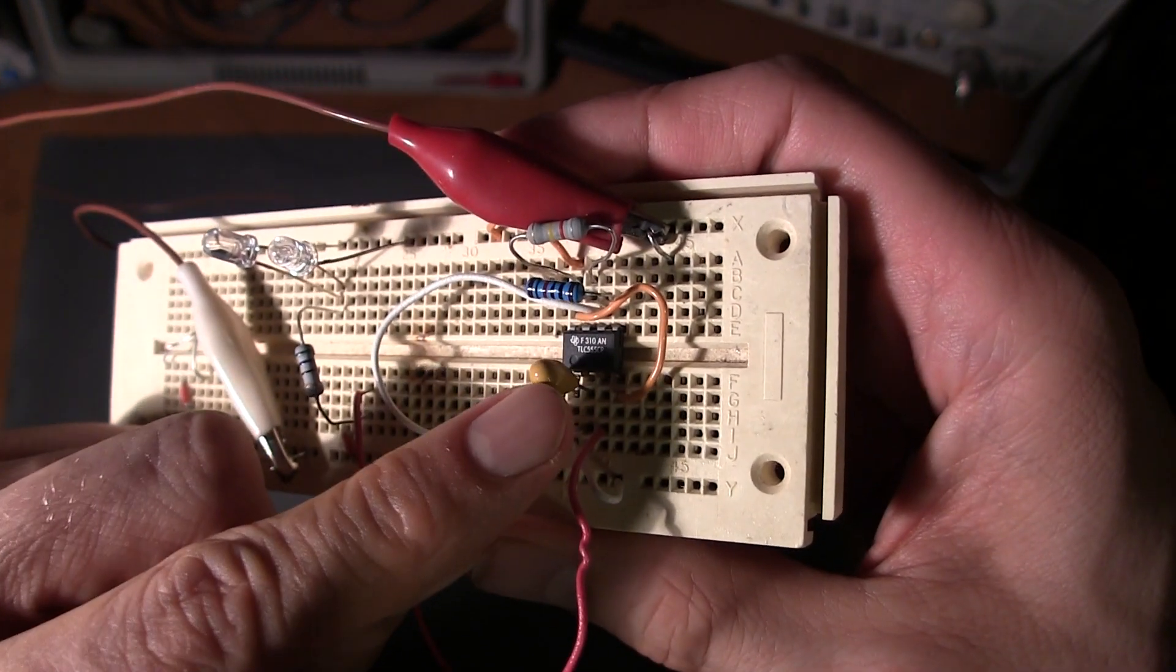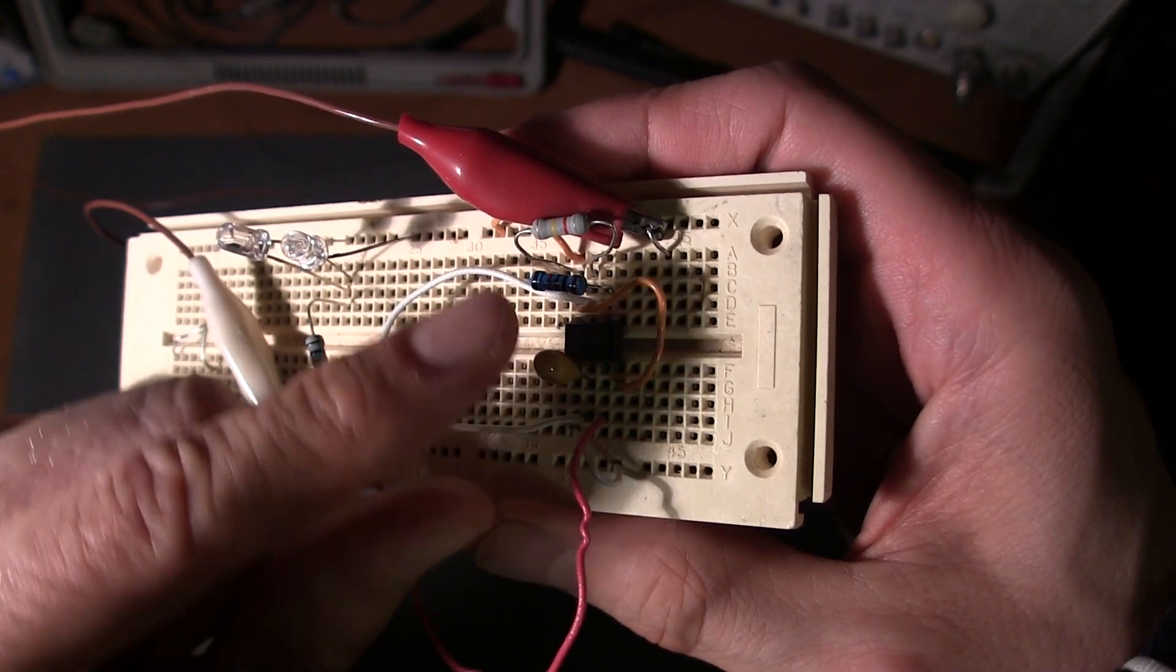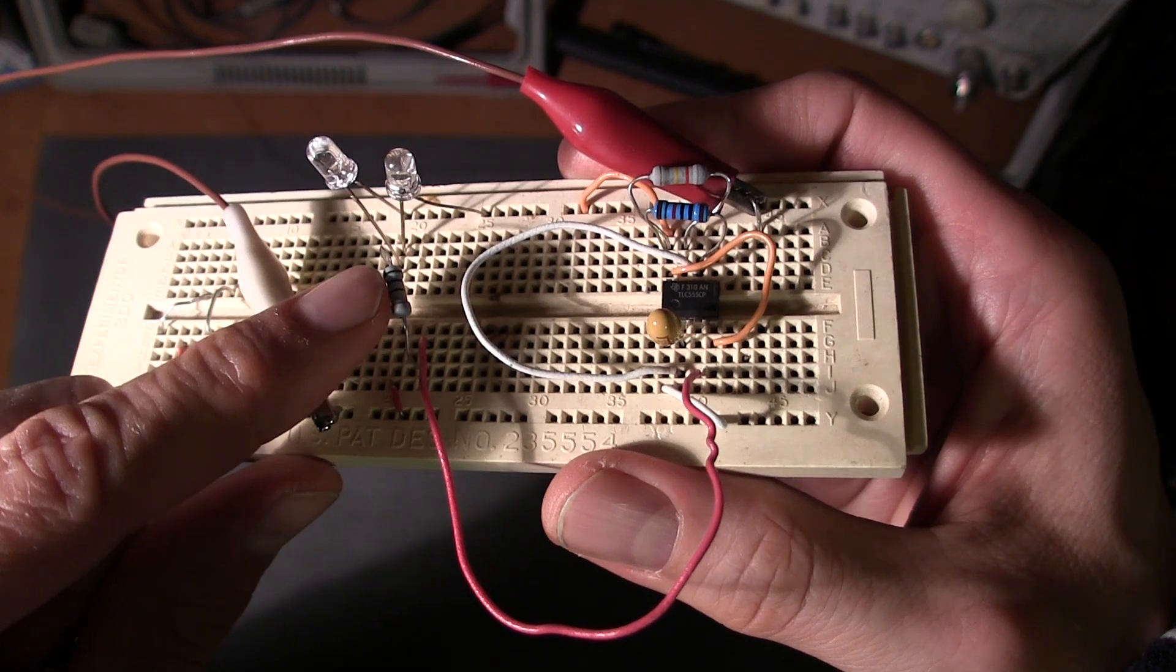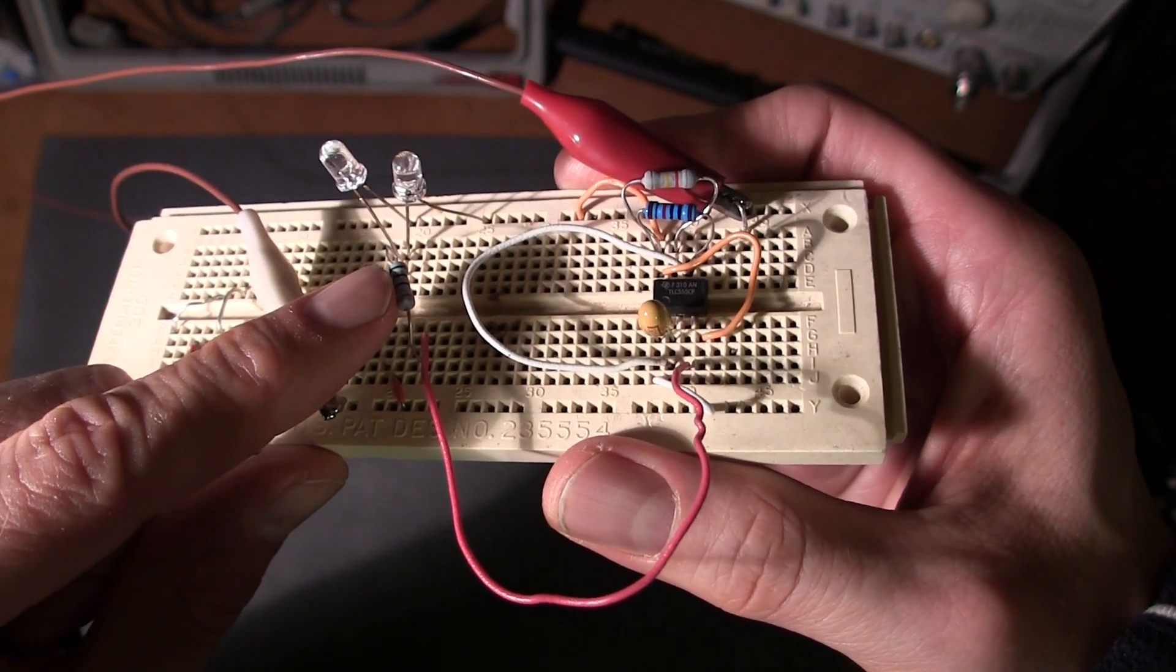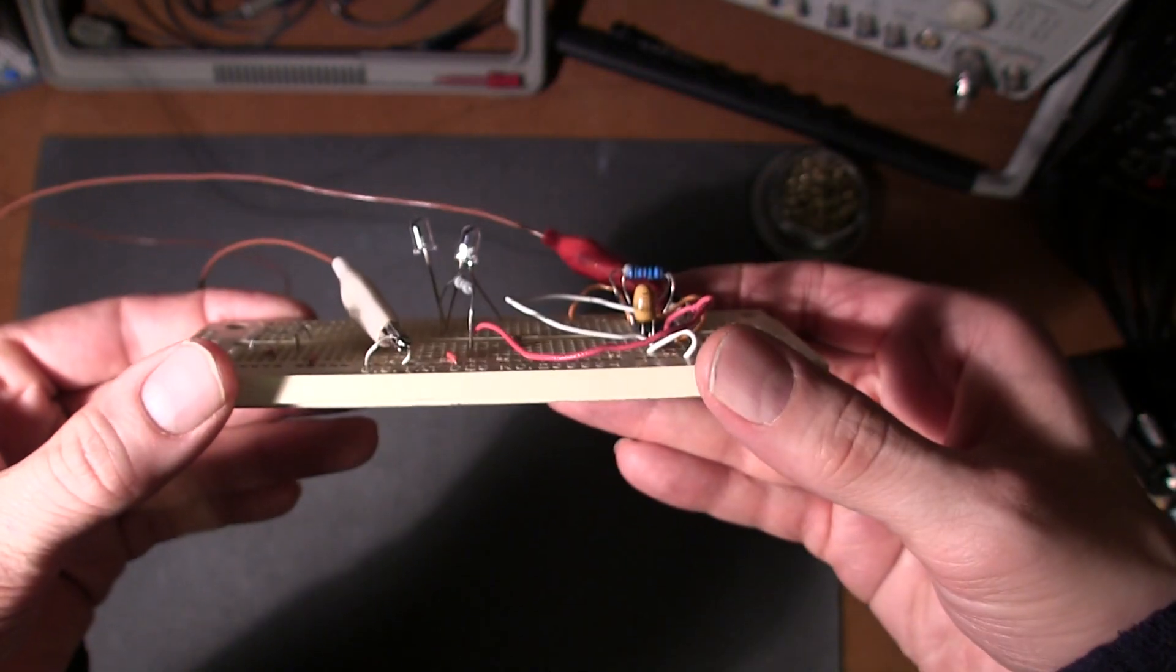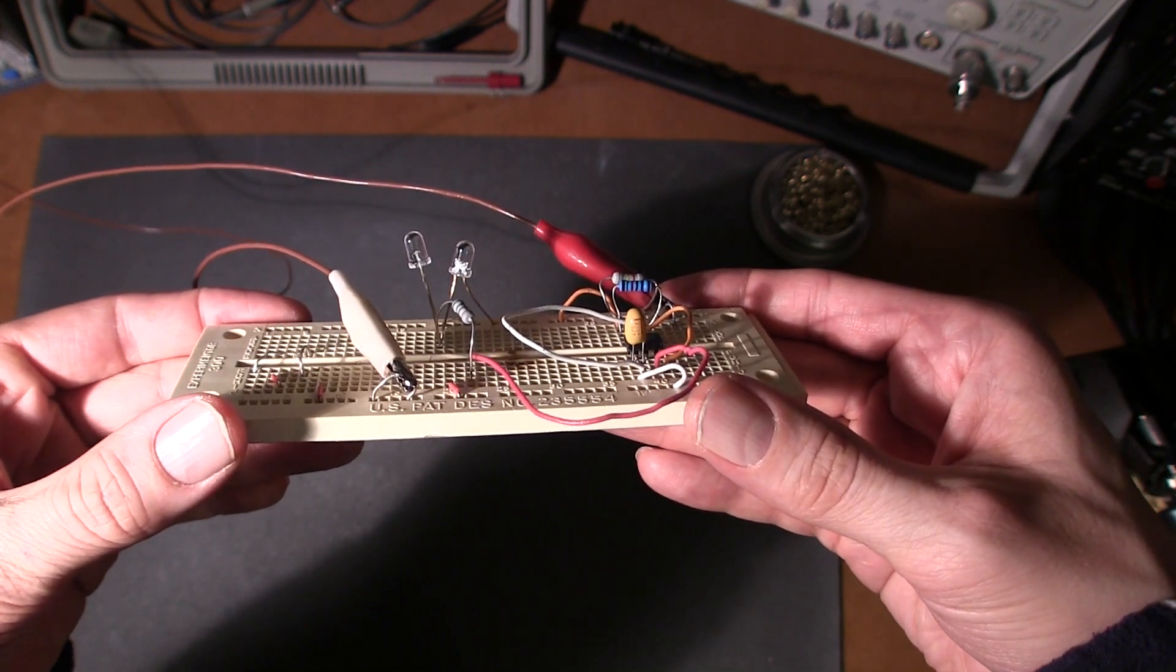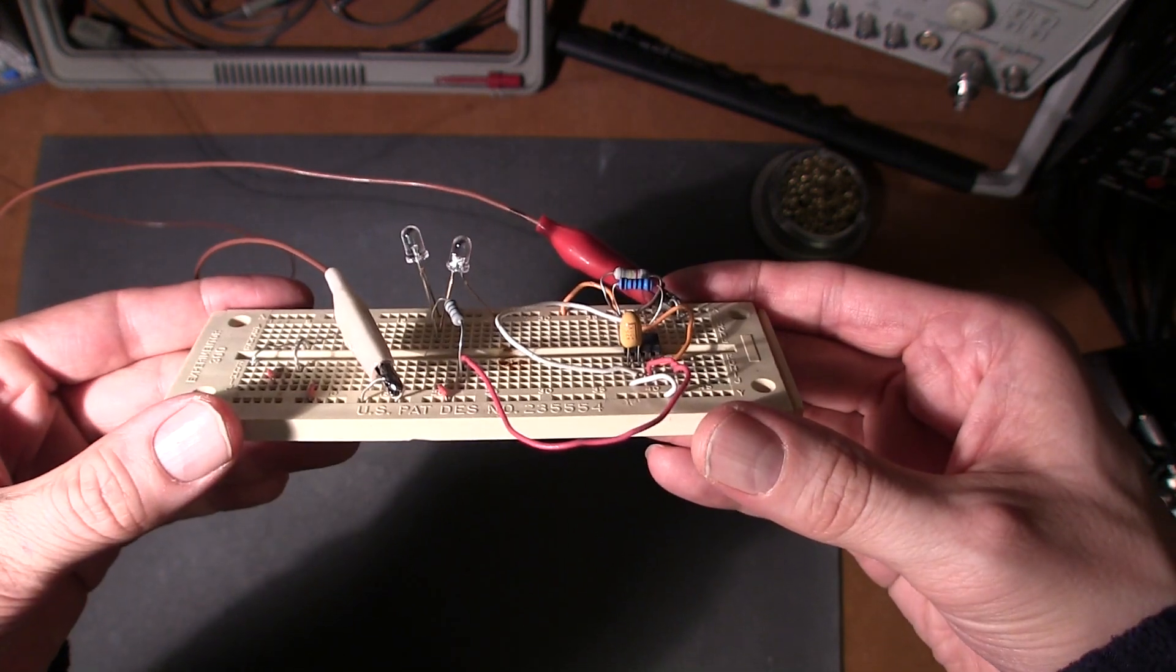a 4.7 microfarad tantalum capacitor, the blue resistor is 10k ohms, the grey resistor is 820k ohms and this is a 56 ohm resistor right here. And you can see the flash rate of the LEDs pretty much mimics what you'd find at the top of a bridge or on a radio tower or something like that.